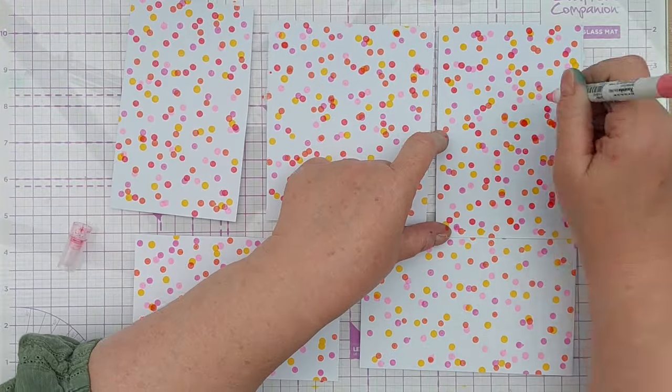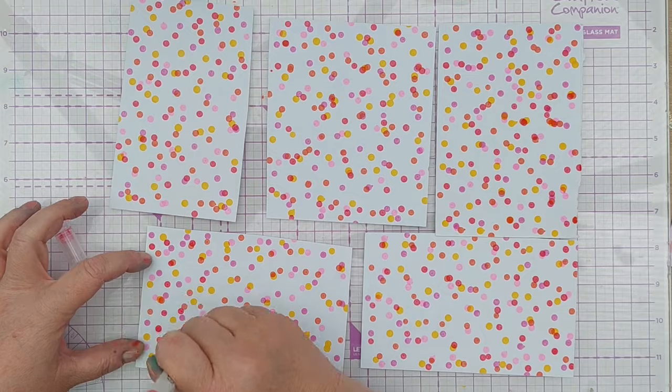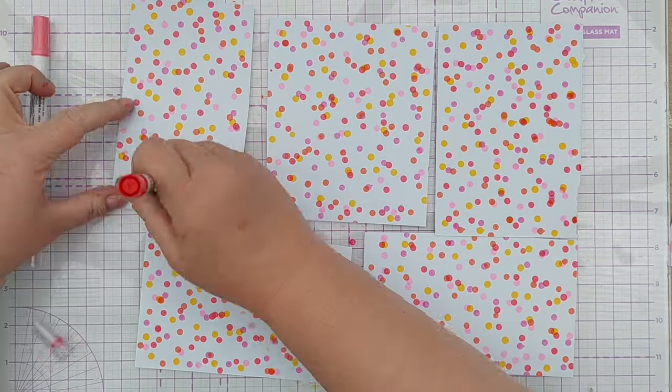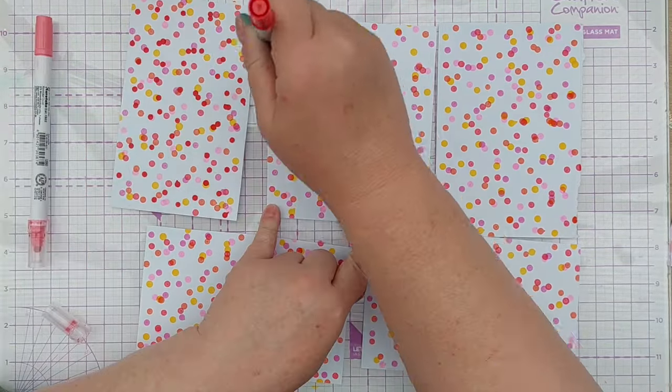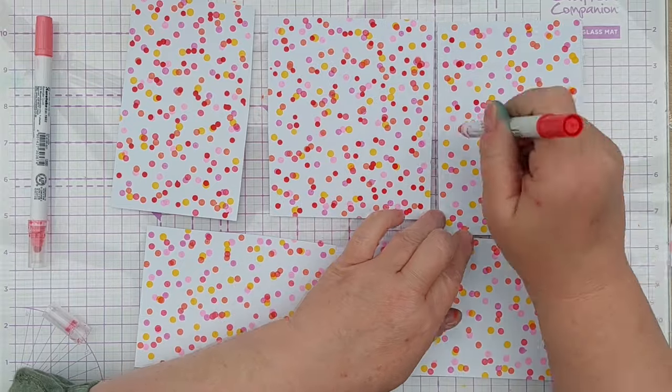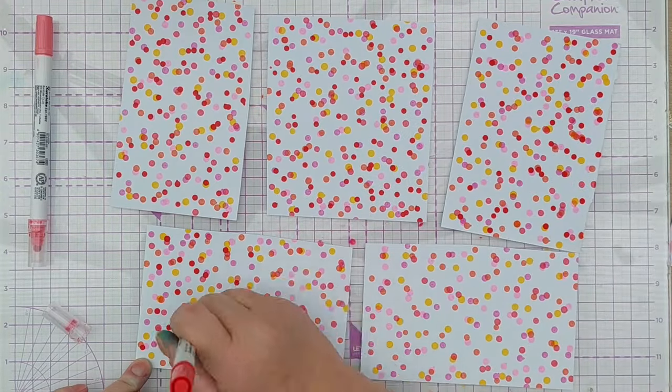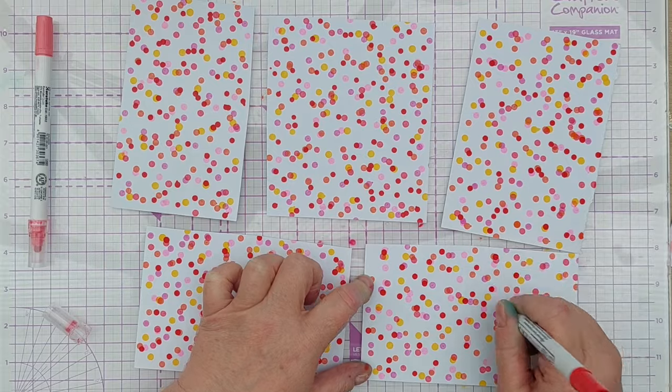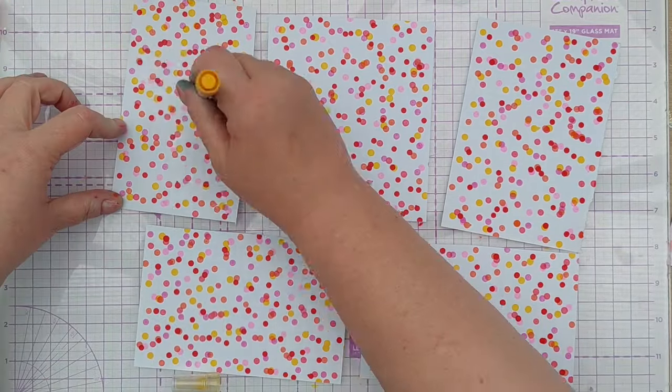You can always go back in once you've finished the first pass with your colors and be a bit more accurate with where you put your dots if you want to fill up some space or if you feel there's not quite enough of one color on a particular piece.